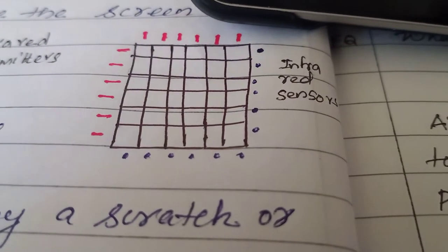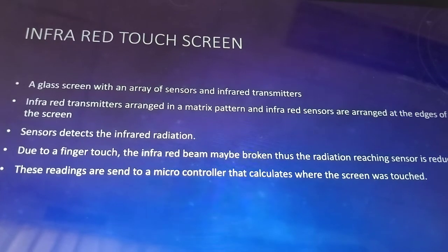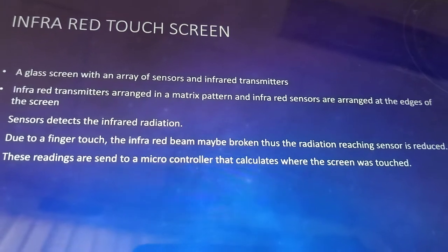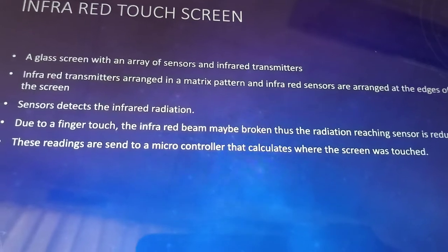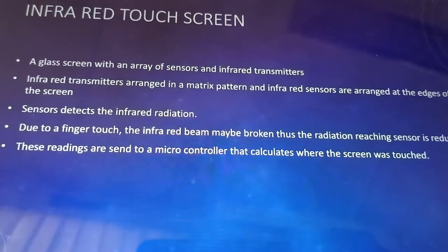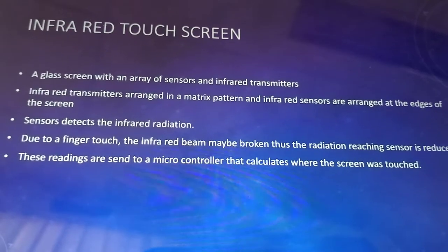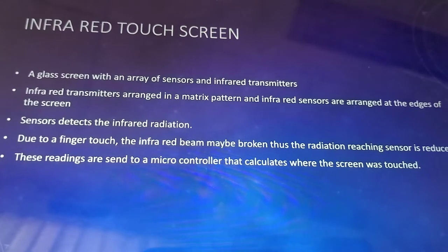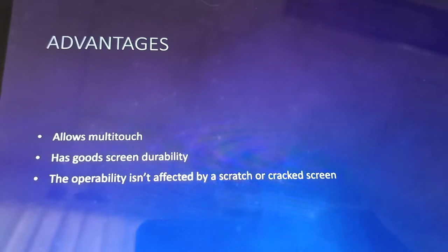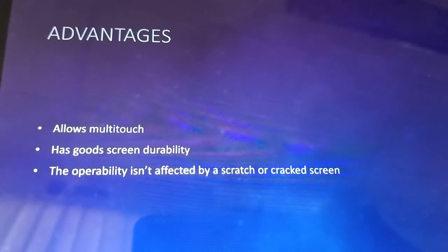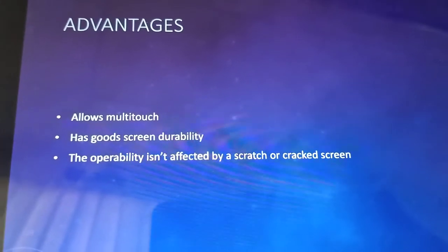Infrared transmitters are arranged in a matrix pattern and the infrared sensors are arranged at the edges of the screen. The sensors detect the infrared radiation due to finger touch — the infrared beam may be broken and thus the radiation reaching the sensor is reduced. These readings are sent to a microcontroller that calculates where the screen was touched.